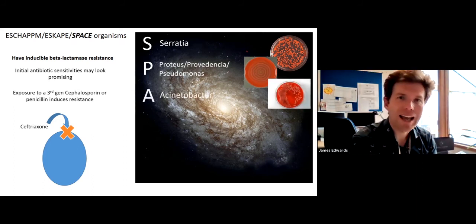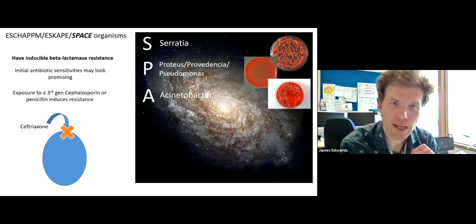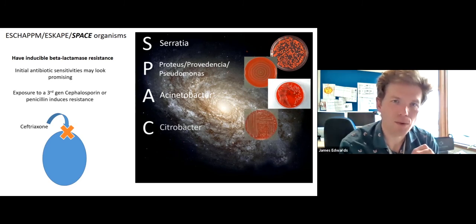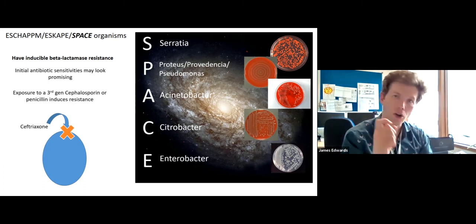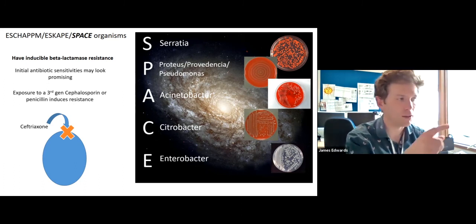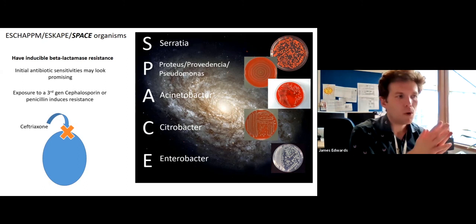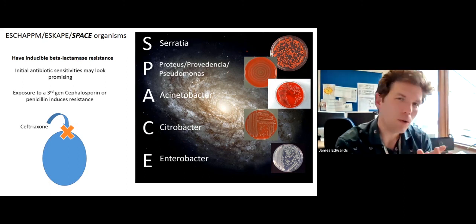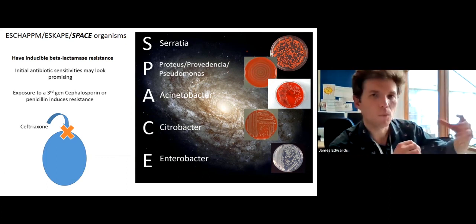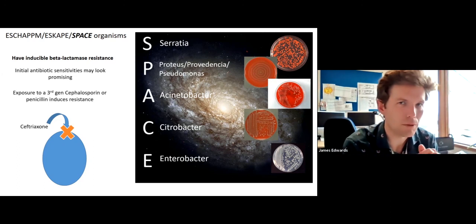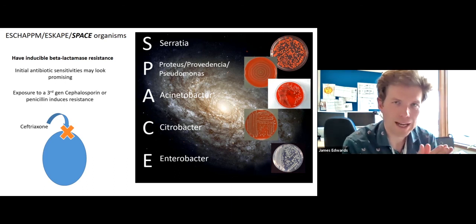A stands for Acinetobacter, a very important hospital infection, important in respiratory and also sepsis. C stands for something called Citrobacter, and E stands for something called Enterobacter, not Enterococcus. Enterococcus is a gram positive. Thinking back to our chart, Enterobacter is a gram negative. These are all slightly more atypical, unusual organisms, and you would probably be, maybe in the back of your mind, if your patient wasn't responding, perhaps you might be considering some of these, but it's an unusual group that contain an inducible beta-lactamase.